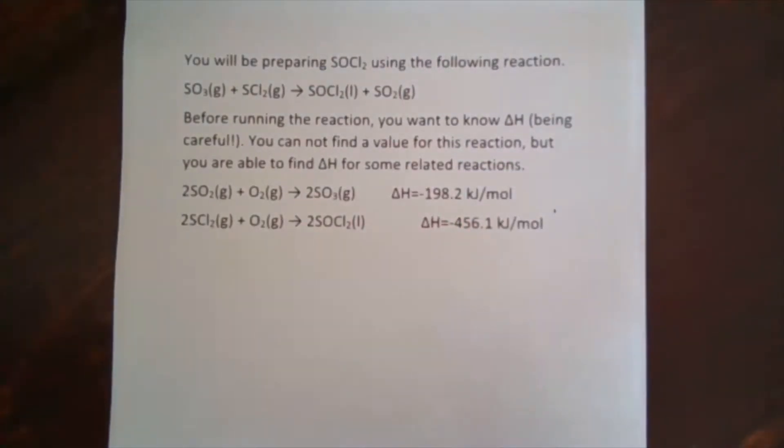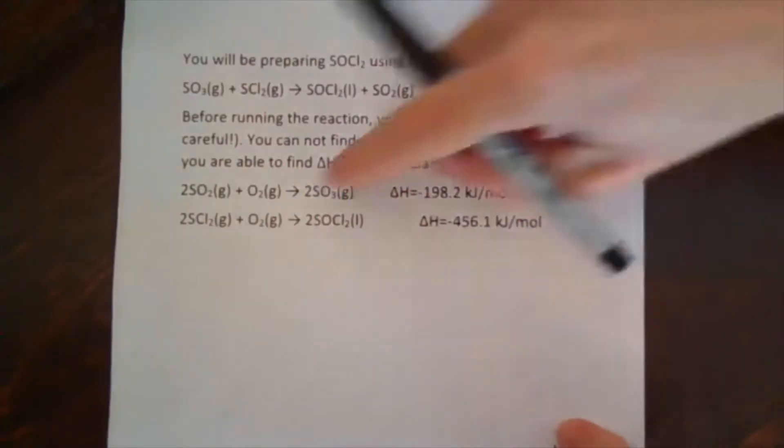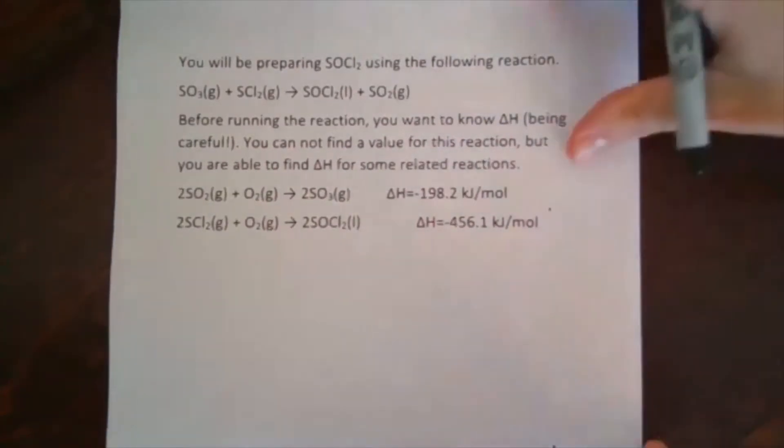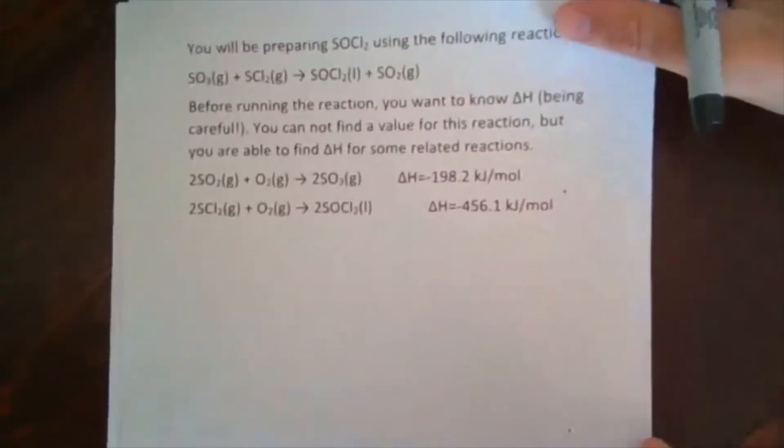We want to know the delta H for this reaction. And so we have two reference reactions. So the previous examples, we've kind of seen how we can add reactions together and how we can modify reactions to look like each other. And so we're going to put those ideas together in this process. So the first thing I want to do is there's a kind of a gut reaction when you see two reactions like this that you want to add them together. That's not what you want to do here. And I'm going to do it to show you why it doesn't work.